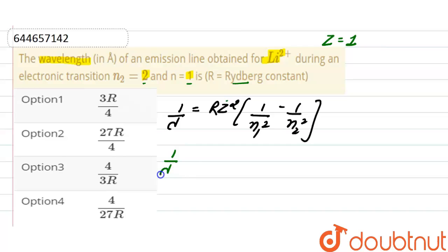Here, putting the values. One by lambda. Here in the options the value of R is constant, so here the value of R is not written. So here R, n1 here is 1, minus the value of n2 is 2 to the whole square.